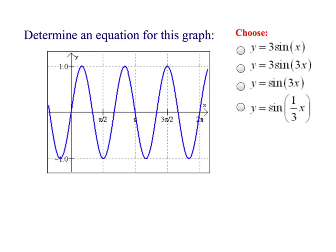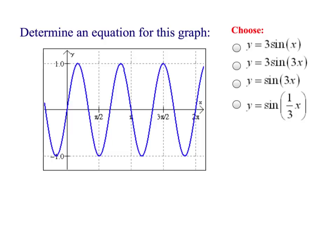We start at the origin again, so it's sine. All four choices are in terms of sine this time, so I can't eliminate any by function type. My amplitude is 1 — the highest point has a height of 1 — so I eliminate choices A and B right away since they both have amplitudes of 3. For frequency: the first cycle completes at one point, the second at another, and at 2 pi that's the completion of the third cycle. Frequency is 3, so I jump on choice C.